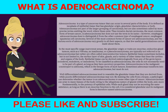By staining the cells from a biopsy, a pathologist can determine whether the tumor is an adenocarcinoma or some other type of cancer. Adenocarcinomas can arise in many tissues of the body owing to the ubiquitous nature of glands within the body, and, more fundamentally, to the potency of epithelial cells. While each gland may not be secreting the same substance, as long as there is an exocrine function to the cell, it is considered glandular, and its malignant form is therefore named adenocarcinoma.